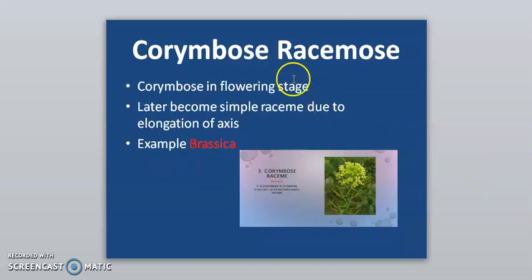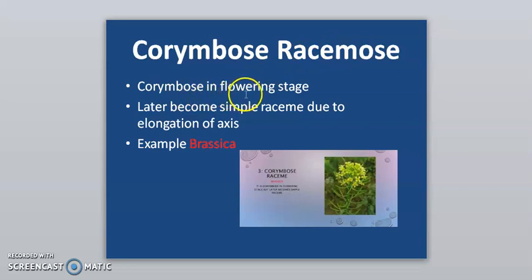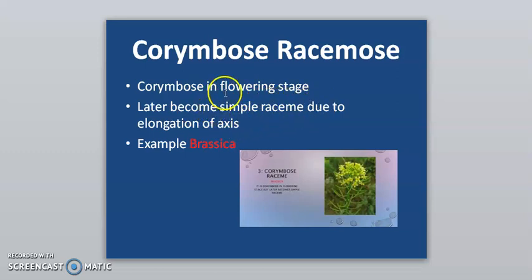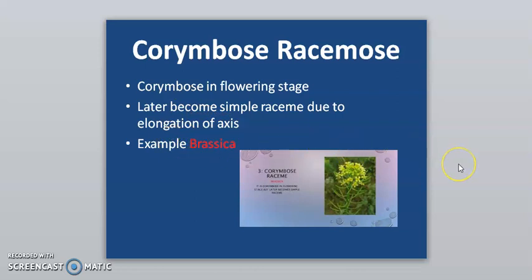In corymbose raceme, it is corymbose during the flowering stage and later becomes a simple raceme due to elongation of the axis. At the first stage they are corymbose, while at the later stage they become racimose — example is Brassica.